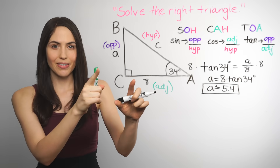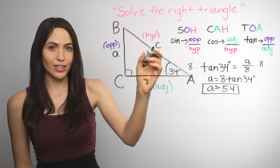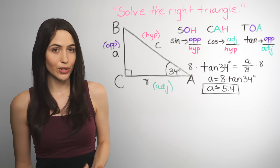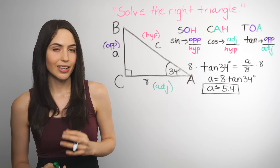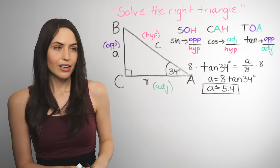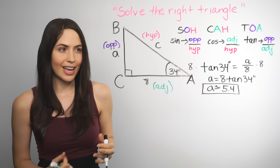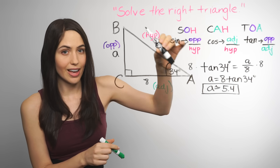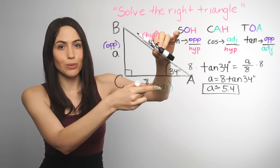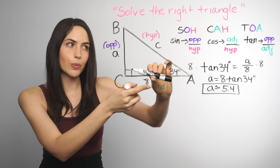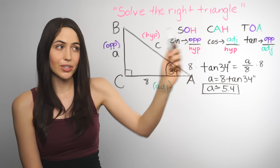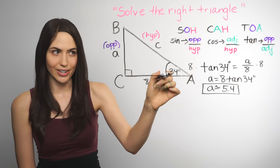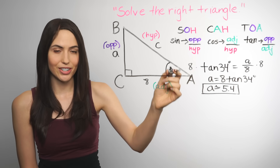Now you have two sides of the triangle and you don't have the third. If you have two sides and want the third, you have a choice: use a trig function or the Pythagorean theorem. Using the trig function, the same idea applies — if you want to find side C, pick the trig function that includes both that side, which is the hypotenuse, and the side you know, which is adjacent. That's cosine, because cosine is adjacent over hypotenuse. So write: cosine 34 degrees equals 8 over C.